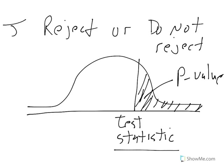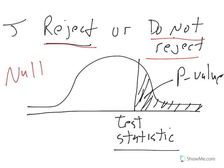Last thing about hypothesis testing: statisticians don't like to be wrong. So therefore, we either reject or do not reject the null. We always go back to our hypothesis. We either reject the claim — that Subway sandwiches are 12 inches or Pepsi sodas are 16 ounces — with sufficient evidence, or we do not reject because we do not have sufficient evidence. We never say we support the claim.